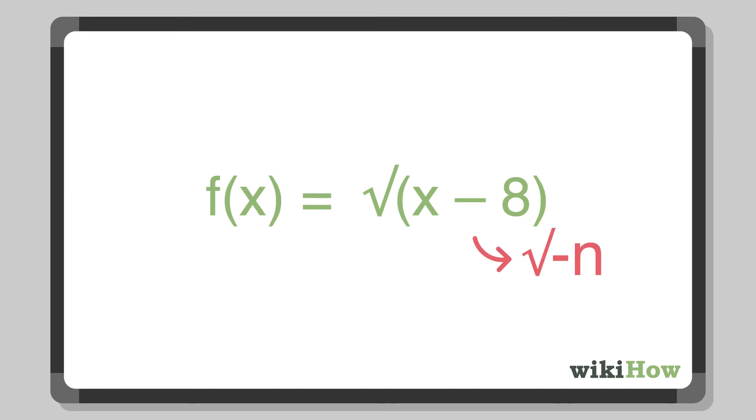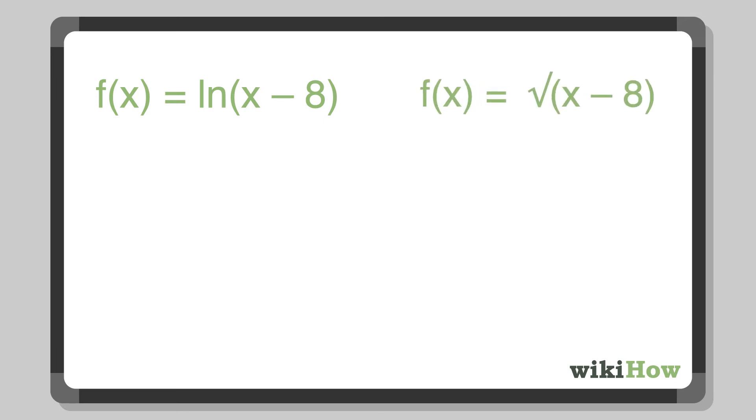The same goes for functions with a natural log. For example, if your function is either f of x equals log natural times x minus 8 or f of x equals the square root of x minus 8, you'd define the domain as any real number greater than or equal to 8. Another way to write this out is d equals 8 to infinity.